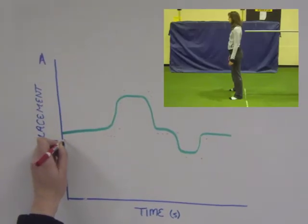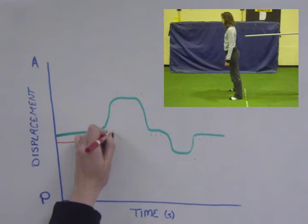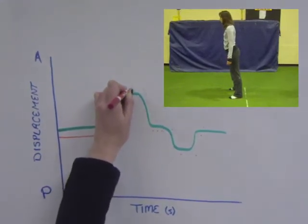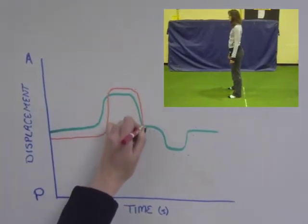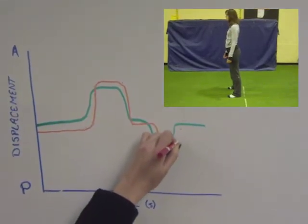If a person is pushed forward, their centre of mass moves in the direction they are pushed. The centre of pressure then responds by moving faster to move past the centre of mass, catch it, and bring it back within the base of support. This keeps the person balanced.